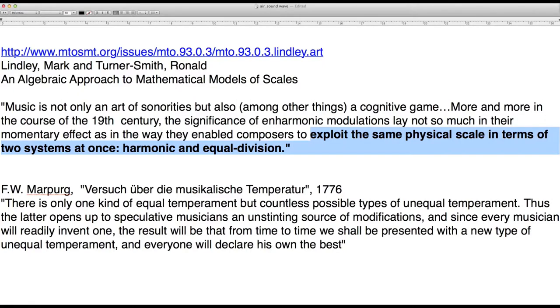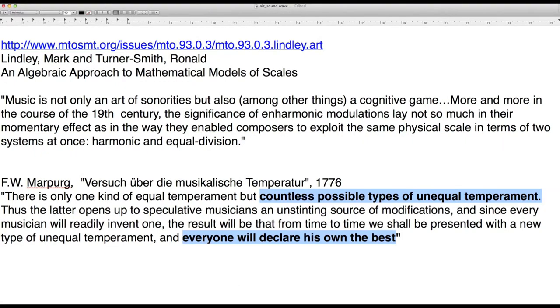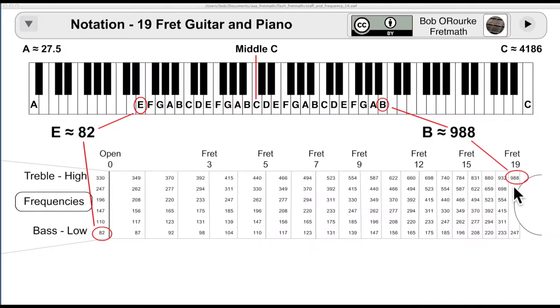Equal temperament, because it approximates just intonation, allows you to think of the same physical scale in terms of both harmonic and equal division at the same time. That gives you a lot of room to move notes around. And again, the harmonic system is the natural subdivision of the vibrating object, and the equal division is the root system of dividing an octave up into equally spaced intervals, intervals that sound equally spaced. And down below there, Marpurg's argument back in 1776 is the reason I would like to stick with equal temperament on my guitar. There's countless types of unequal temperament, and everyone declares his own the best, and that's pretty much what I see on the internet.